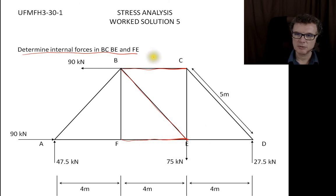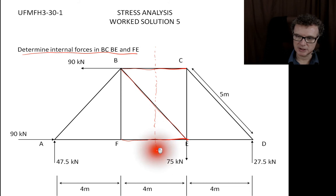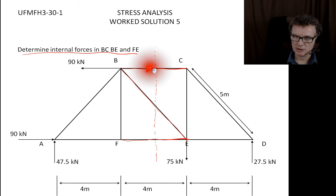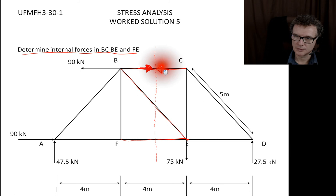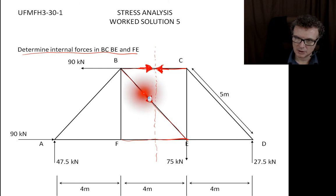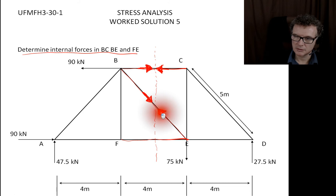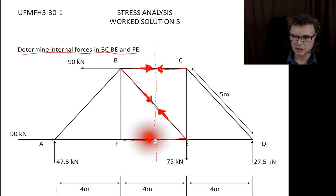Those are the members I need to cut through — I'll cut straight down the middle. Making this cut exposes my internal forces either side: one internal force here and an equal and opposite internal force pointing the other direction, then an internal force in BE and its equal and opposite, and similarly for FE. Forces always have to cancel out and point in opposite directions.